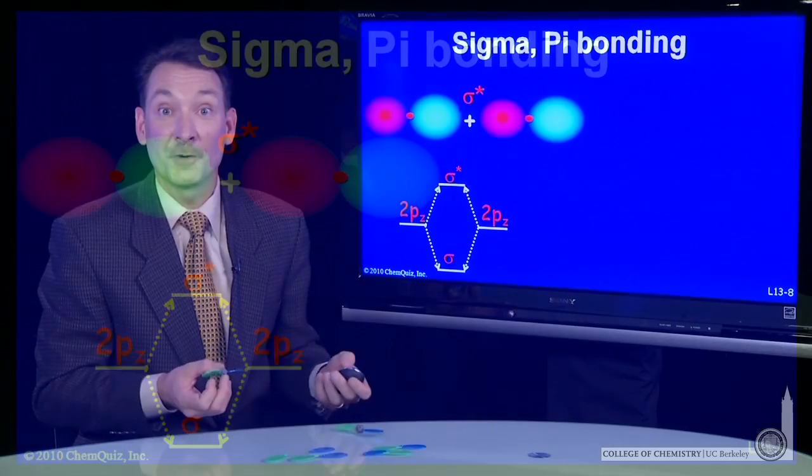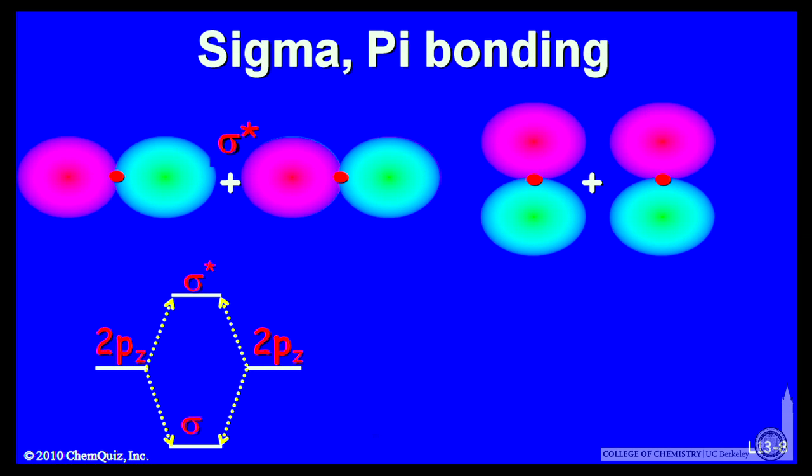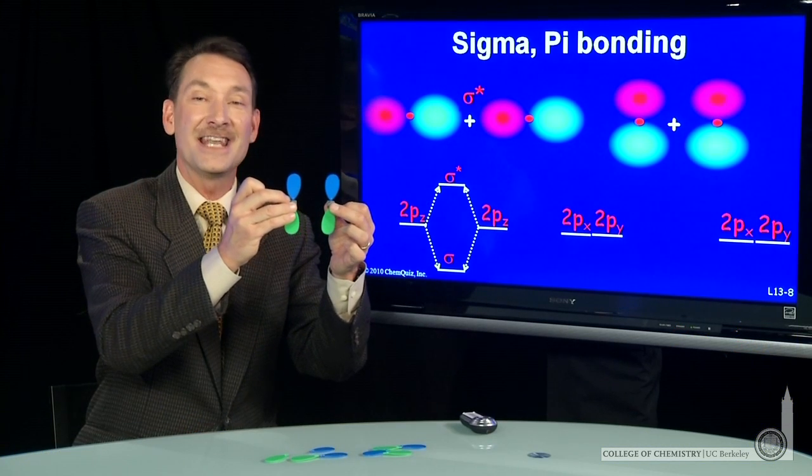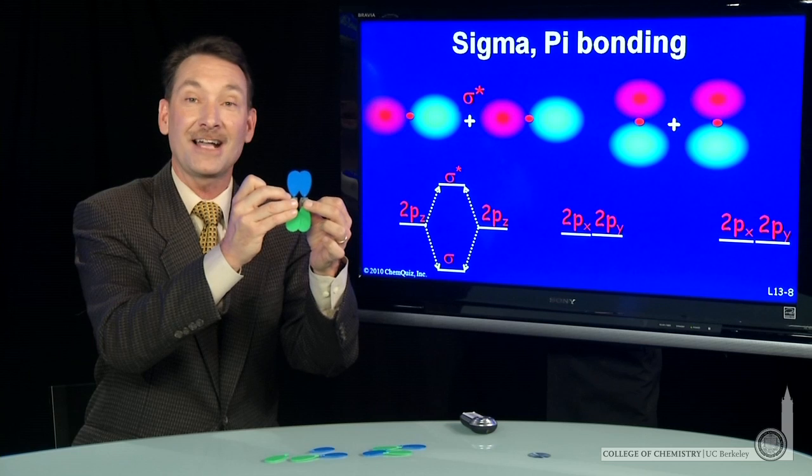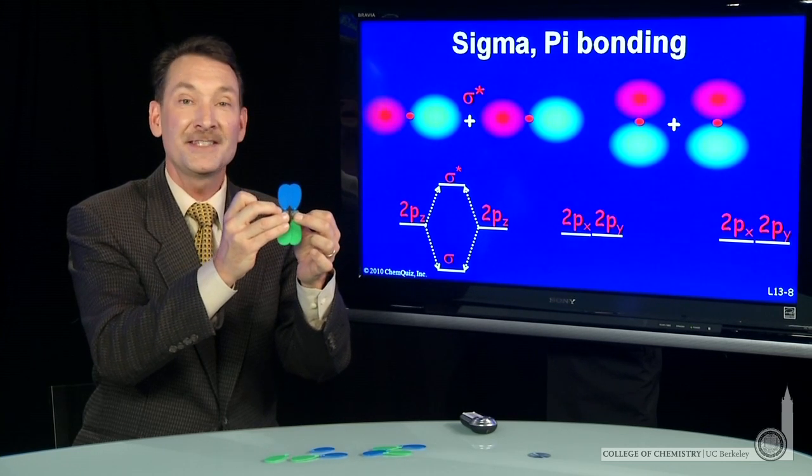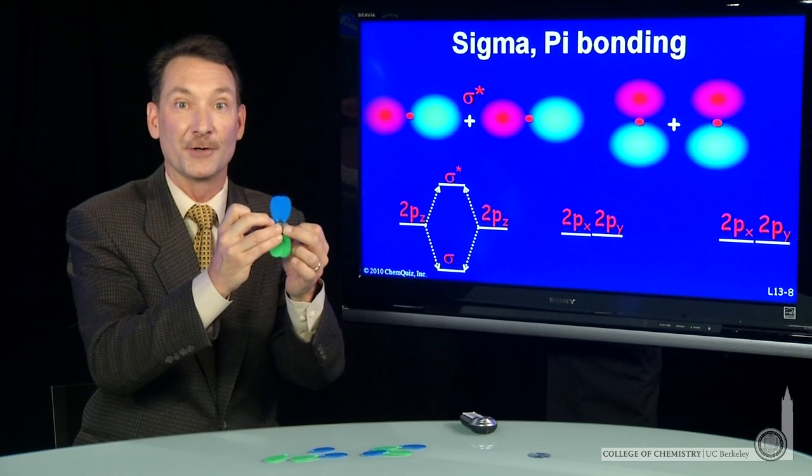Now, I can look at the other p orbitals. There's also the px and the py. If I add those, they're above and below that z-axis. So here I can add together px and px and get a bonding orbital. In this case, I'll call it a pi bonding orbital.